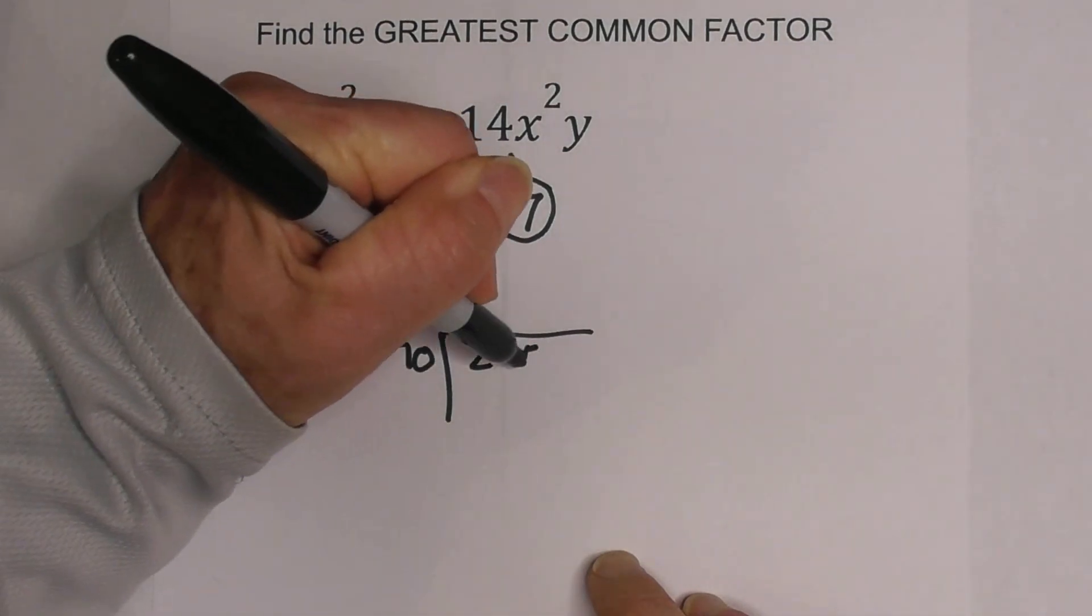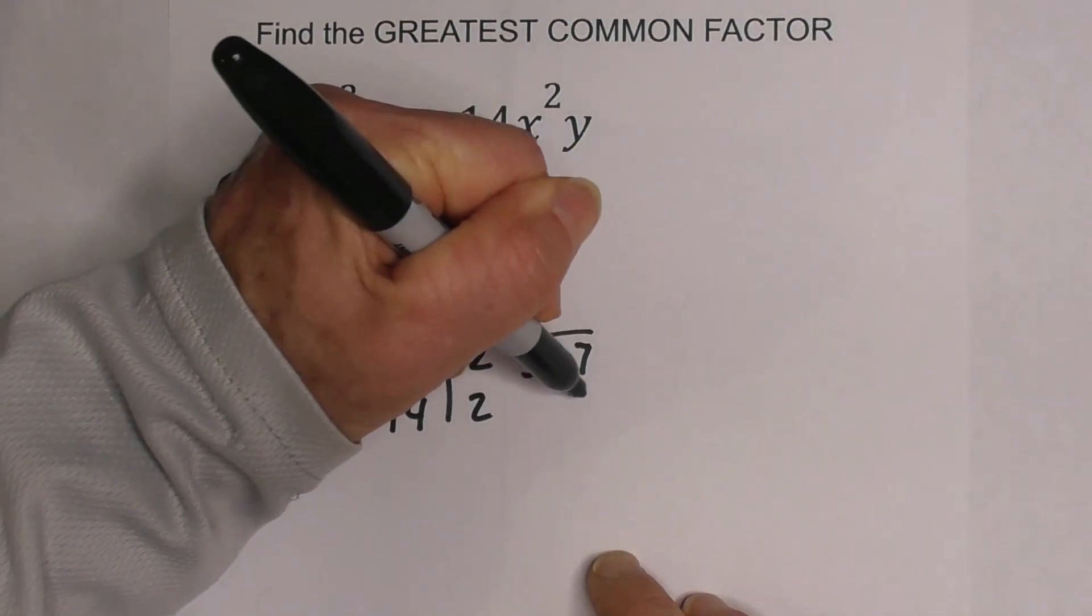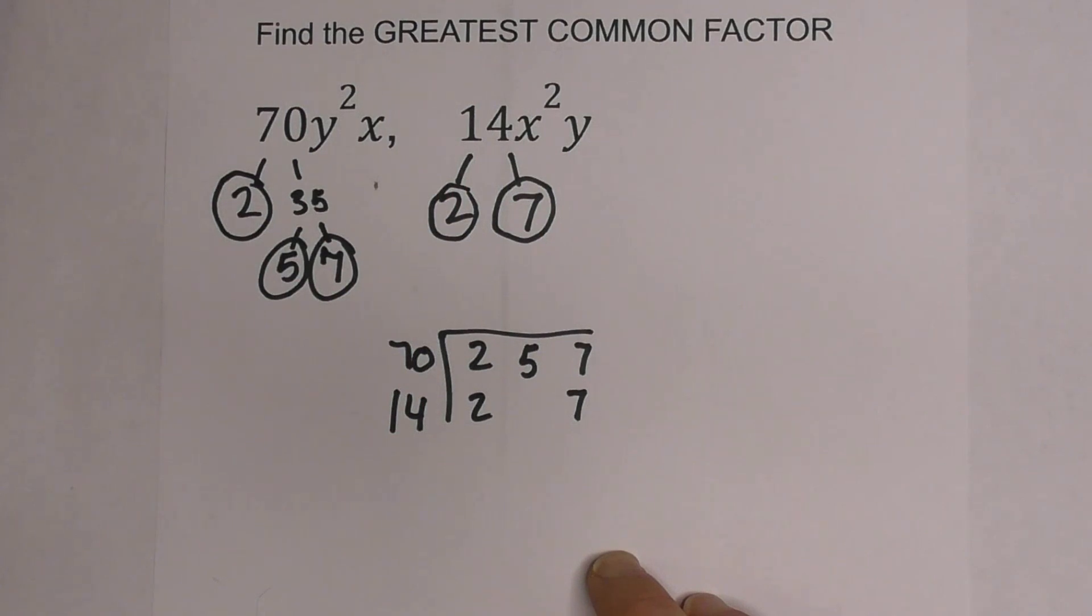I've got a 2, a 5, and then a 7. And then for 14 I have a 2 and a 7.